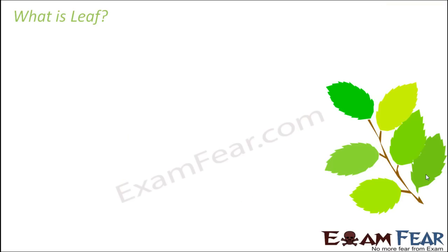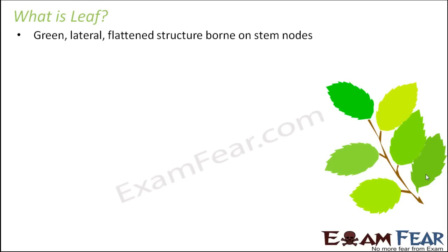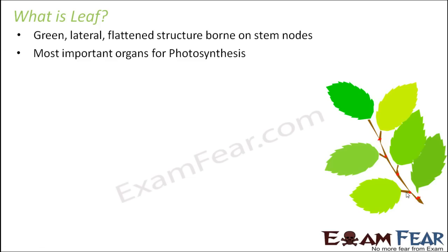The first thing that comes to mind is: what is a leaf? From the perspective of structure, leaves are nothing but green lateral flattened structures born on stem nodes. At the stem nodes, green plant structures called leaves are born. They are the most important organs for photosynthesis. Even though every part of the plant is important, as far as photosynthesis or food preparation is concerned, leaves play the most important role.